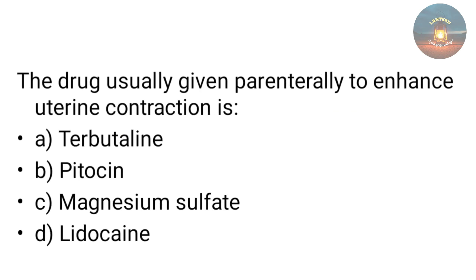The drug usually given parenterally to enhance uterine action is — terbutaline, pitocin, magnesium sulfate, or lidocaine? We give pitocin (oxytocin) drips in order to facilitate uterine contraction.